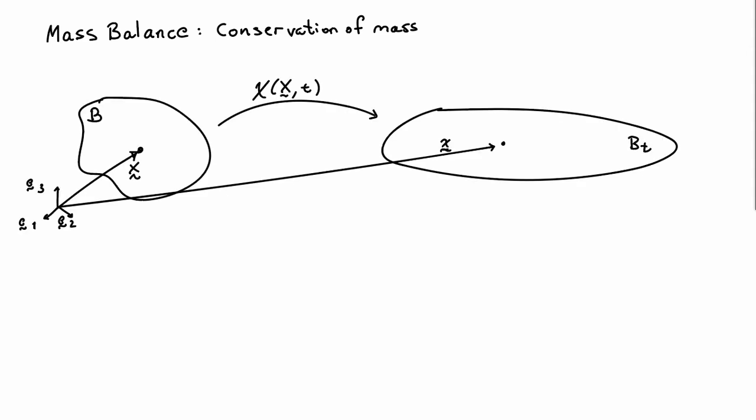Now, we're going to start with our usual setup where we'll have a body B and material points labeled by capital X. And the body deforms and occupies a new part of our three-dimensional space. And we'll denote that by BT. And the material point that's located at capital X ends up at the location little x after mapping by the deformation map.